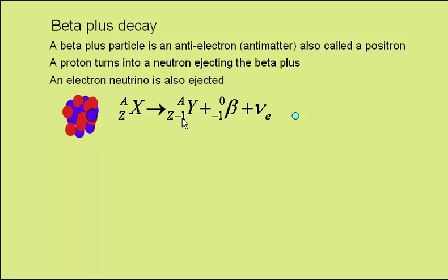To make it balance, the beta plus particle has an atomic number of plus one. So Z equals Z minus one plus one. Again, atomic mass A equals A plus zero.